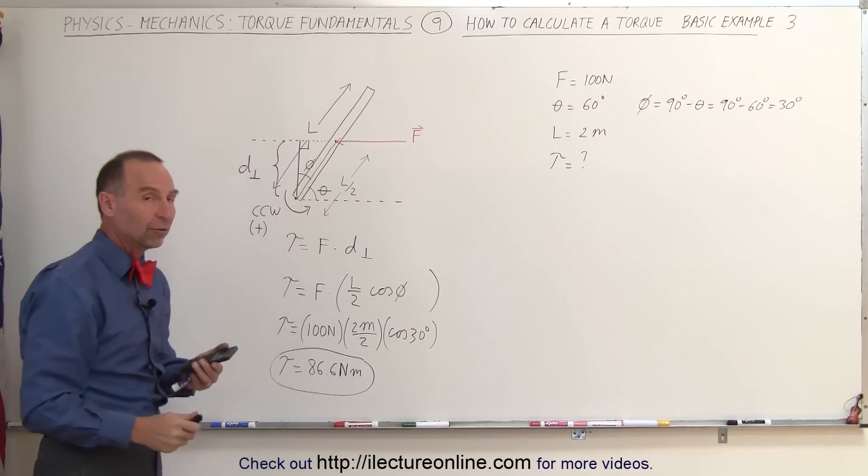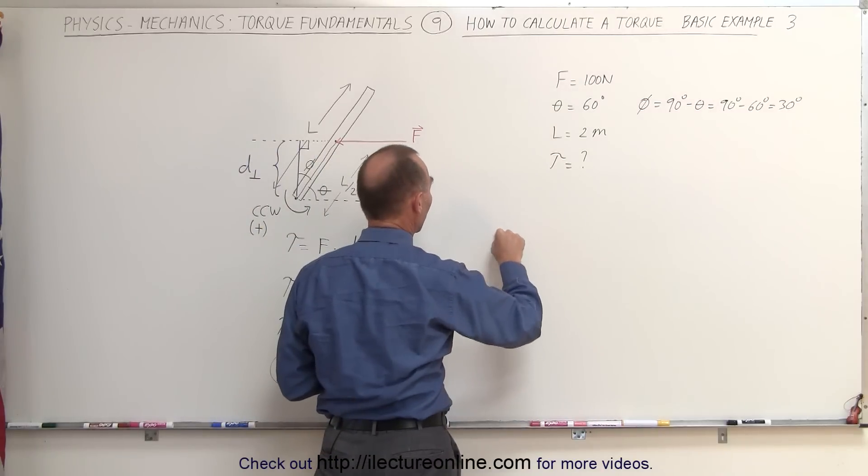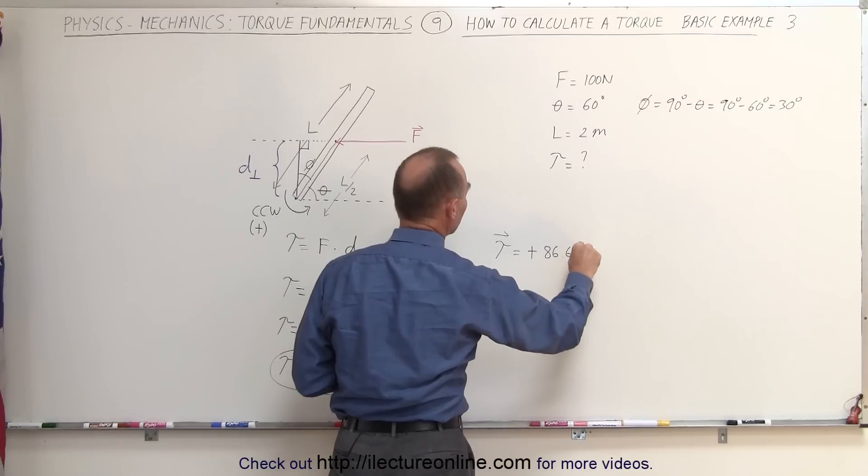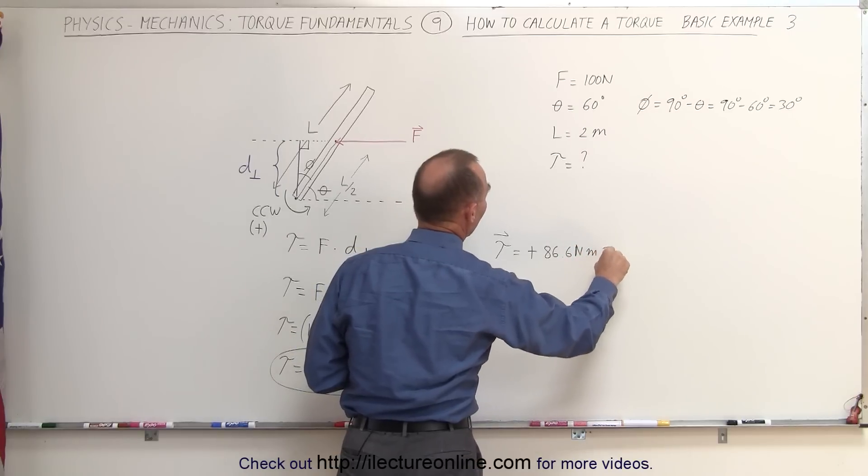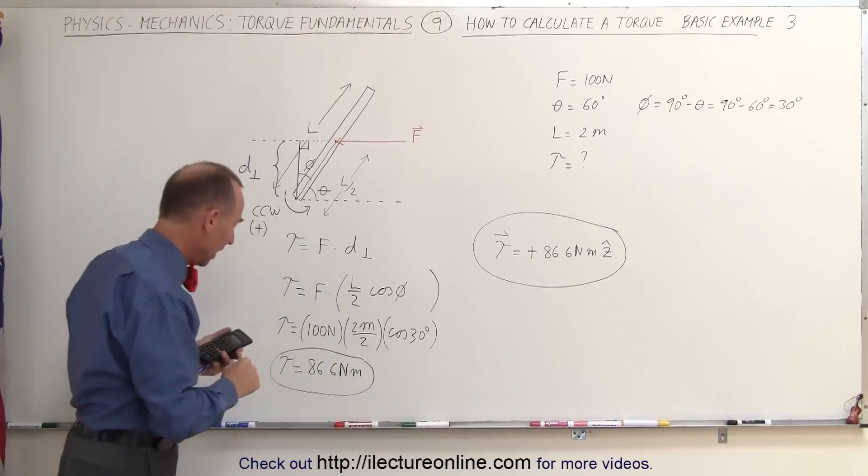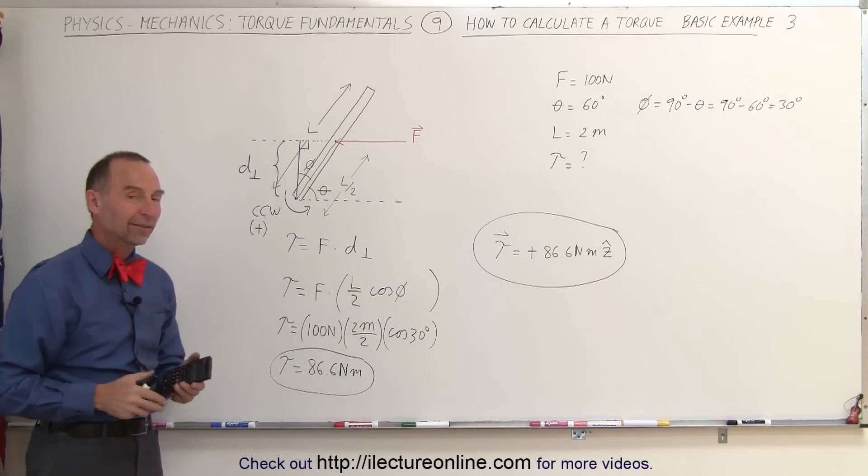This is the magnitude of the torque. If you want to write it with a sign, then you can say that the torque in vector form is equal to a positive 86.6 newton meters in the positive z direction. And that's how you write it as a vector form. And this is how you write it simply in terms of its magnitude. And that's how it's done.